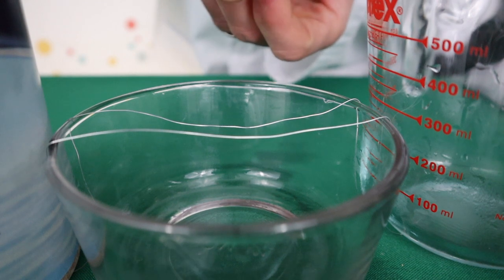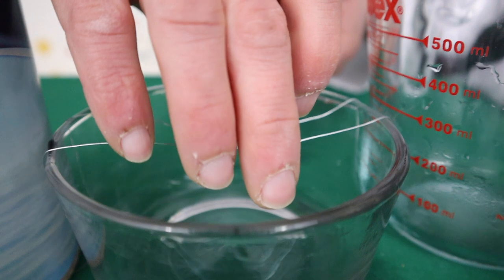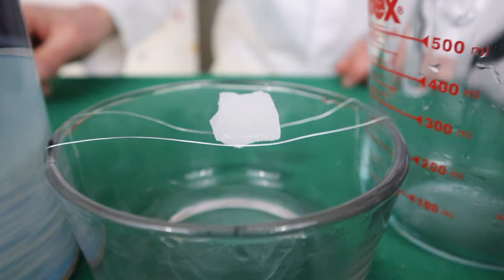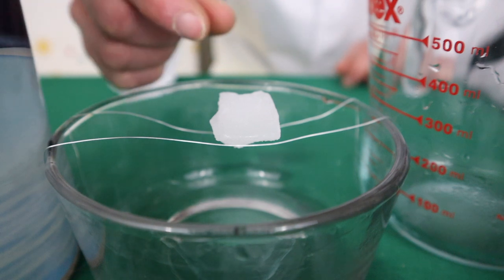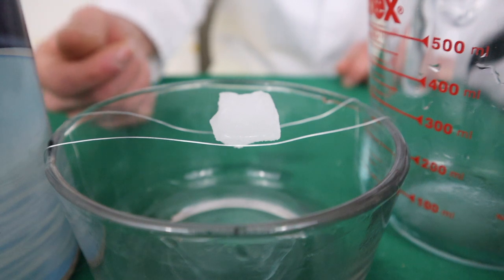Now for this one, we're simply going to put an ice cube on top of two wires. It's a bit tricky to get it to balance. We're just going to let it sit there and what's going to happen is that the wire is going to melt the ice where it's touching and then the ice will re-freeze around the wire as it falls through.